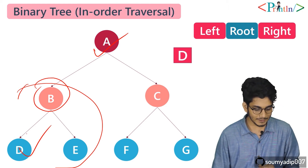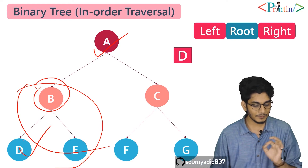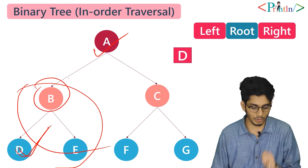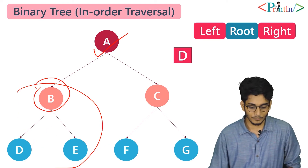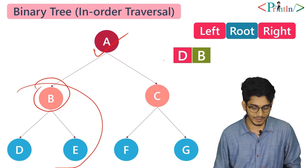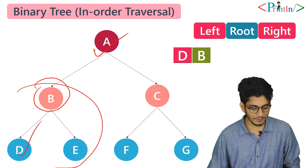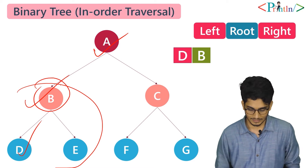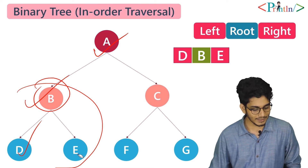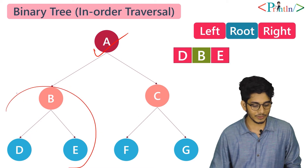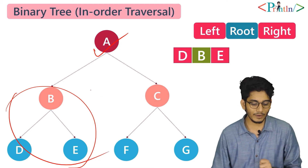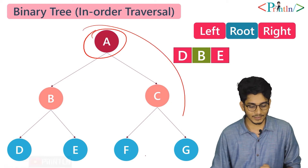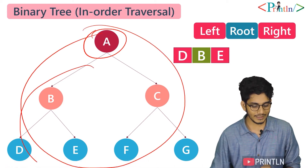So we have successfully traversed left for B. Now what we will do? We will traverse the root. Then we will print B. Now we have traversed left and root. Then what we have to do? We have to traverse the right. Now we will print E. So we have successfully traversed this subtree. Now what we will do? We will print the root node. For this tree, we have traversed the left subtree.